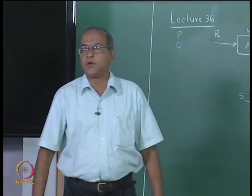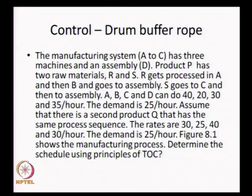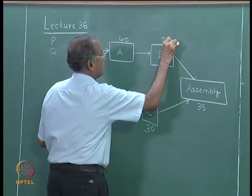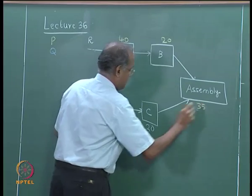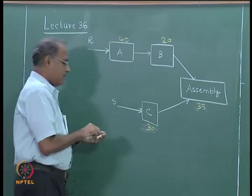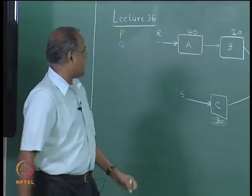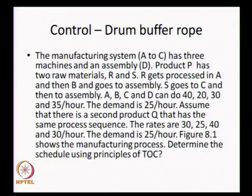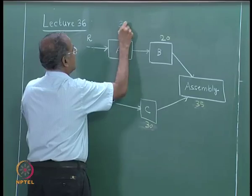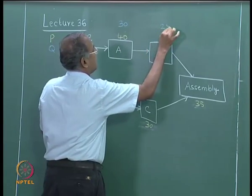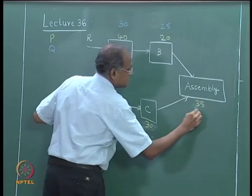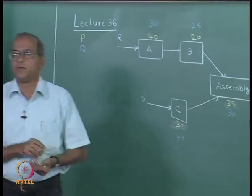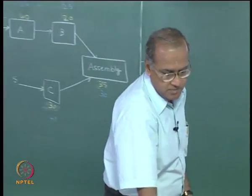There is a second product Q that has the same process sequence with rates 30, 25, 40, and 30 per hour. So for P the rates are 40, 20, 30, and 35 per hour, and for Q the rates are 30, 25, 40, and 30 per hour. Product Q also uses the same raw materials R and S.